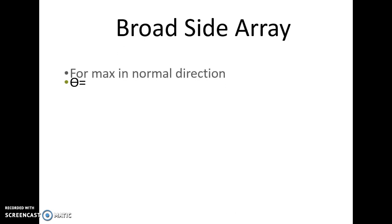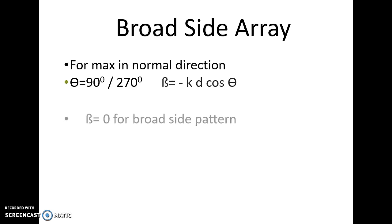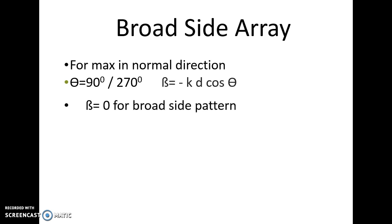Applying this condition to a broadside array, where the radiation pattern is along 90 and 270 degrees, if we substitute θ = 90° or 270° into β = −kd·cos(θ), we obtain the condition for the broadside array as β = 0. This is reflected in the radiation pattern shown.